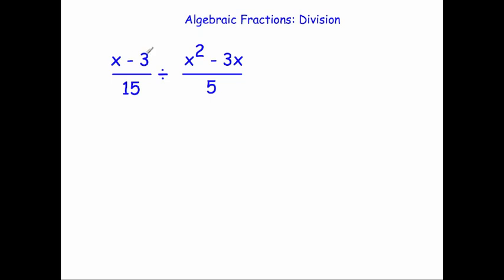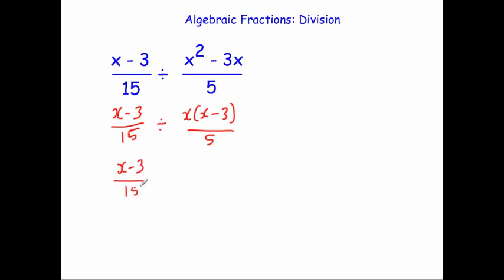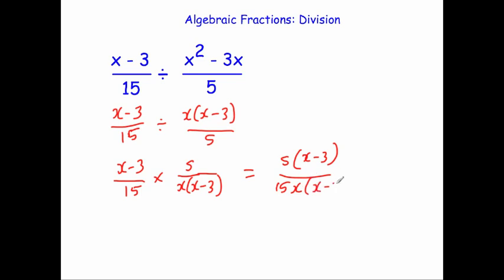Our next example: (x minus 3) over 15 divided by (x squared minus 3x) over 5. Before proceeding, I'm going to factorize the numerator of the second fraction. x squared minus 3x factorizes to x bracket (x minus 3), all over 5. Now keeping the first fraction and multiplying by the reciprocal of the second gives (x minus 3) over 15 times 5 over x(x minus 3). Multiplying the numerators gives 5(x minus 3), and the denominator gives 15x(x minus 3).